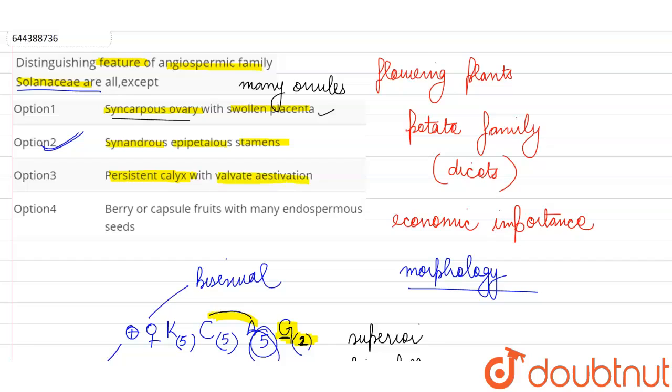Then about the fruit, they are saying it's either a berry or capsule with many endospermous seeds, so that is also correct. So the feature which is not correct for Solanaceae or the potato family is option B.